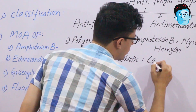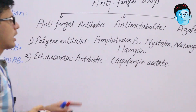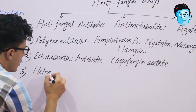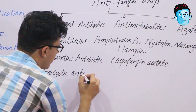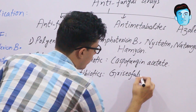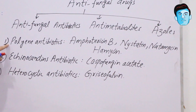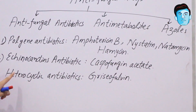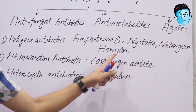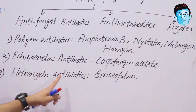The second class is echinocandin antibiotics, which contains caspofungin acetate. The third class is heterocyclic antibiotics, which contains the famous drug griseofulvin. So antifungal antibiotics are classified into polyene antibiotics (amphotericin B, nystatin, natamycin, hamycin), echinocandin antibiotics (caspofungin acetate), and heterocyclic antibiotics (griseofulvin).